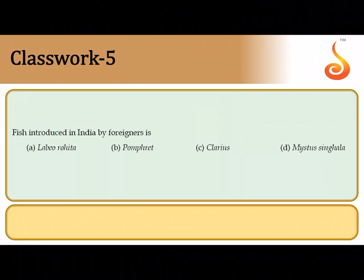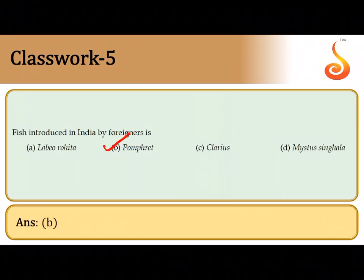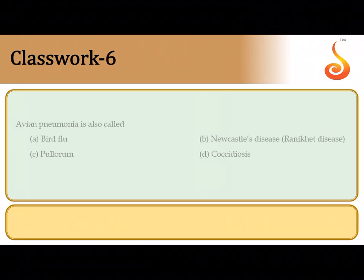The fifth question: which fish was introduced in India by foreigners? It is an alien species introduced by foreigners — pomfret. It is a marine edible fish. So the correct answer is option B.